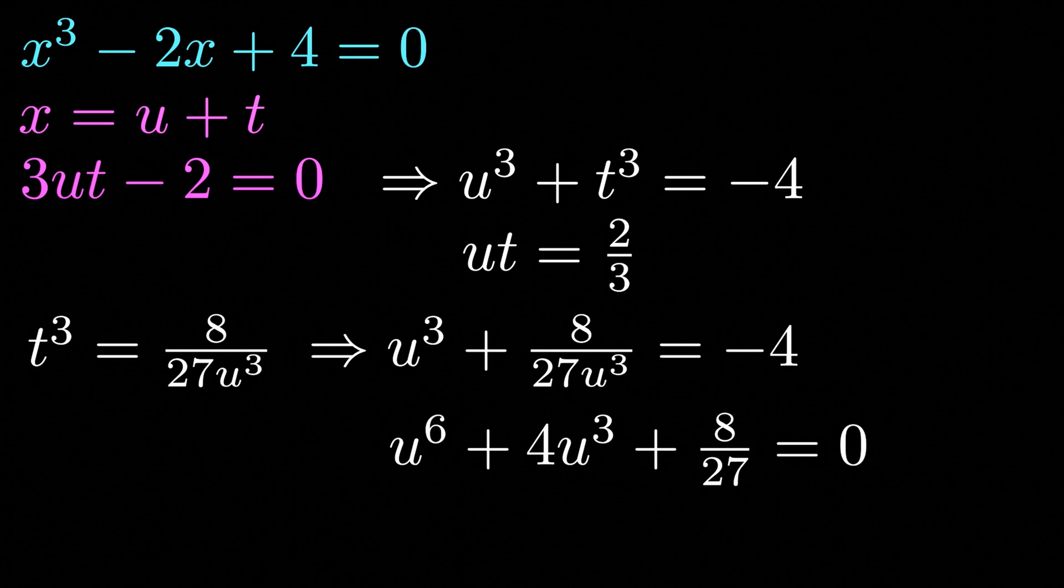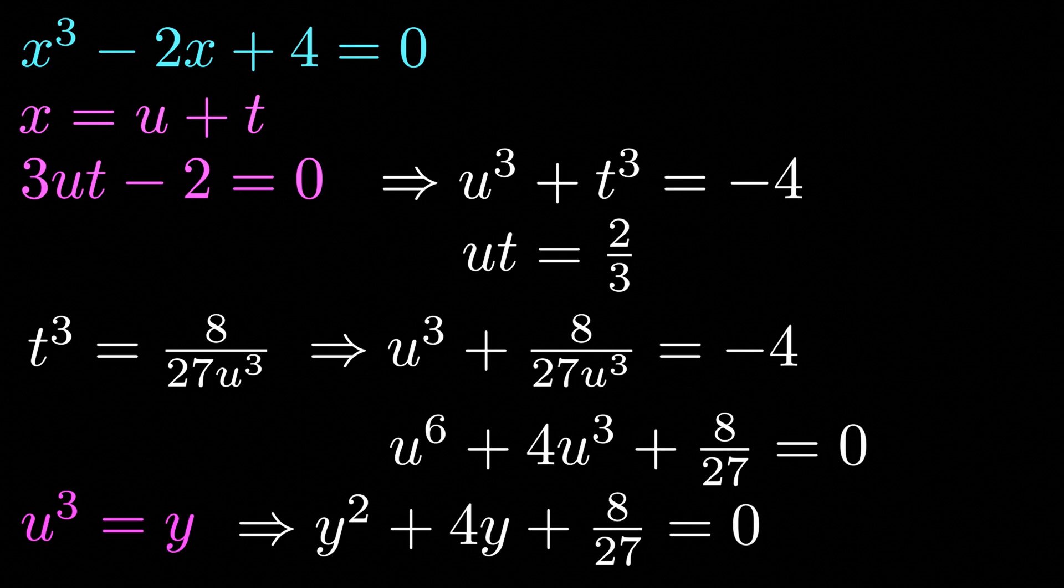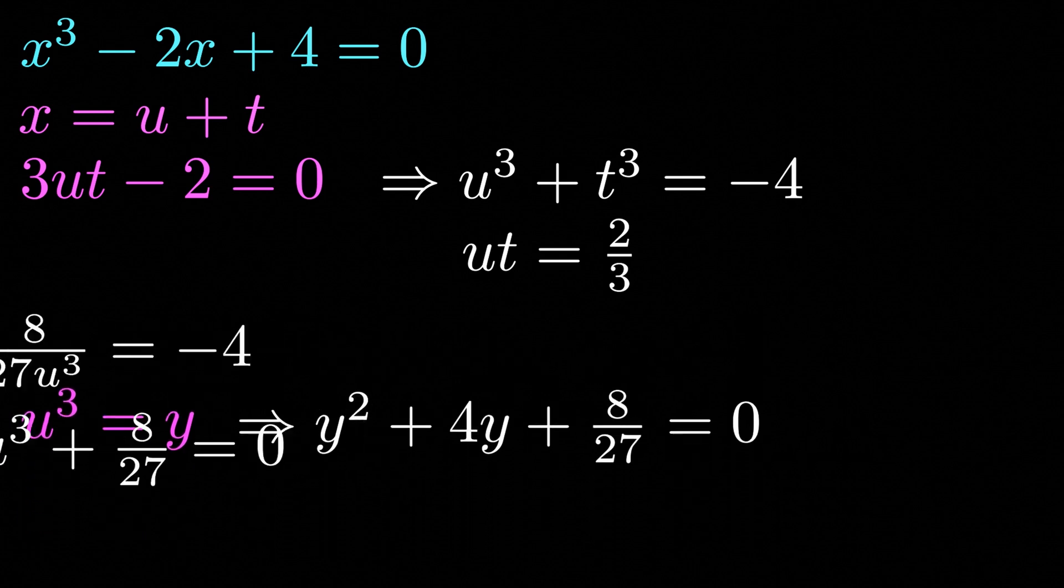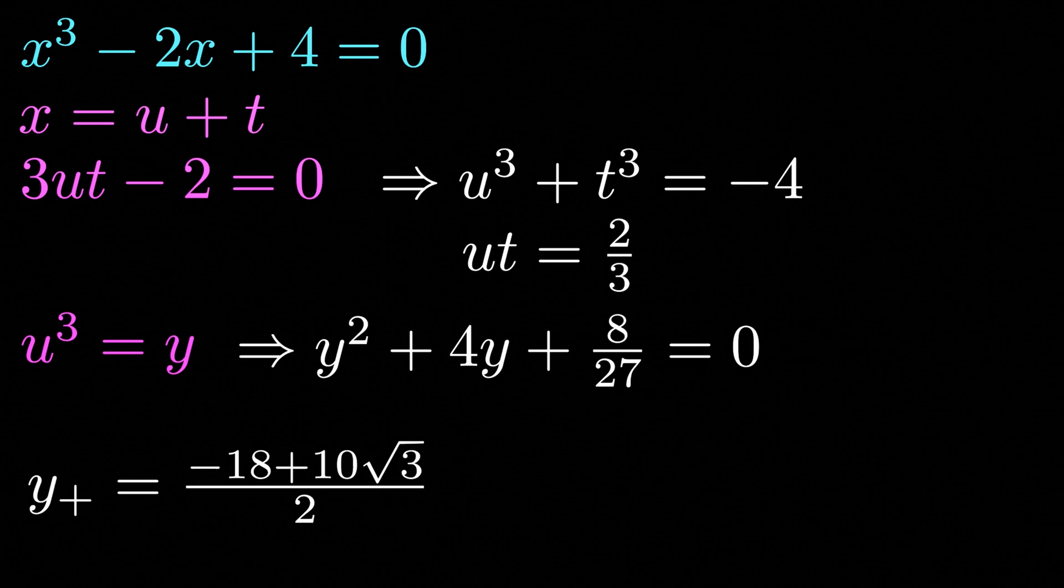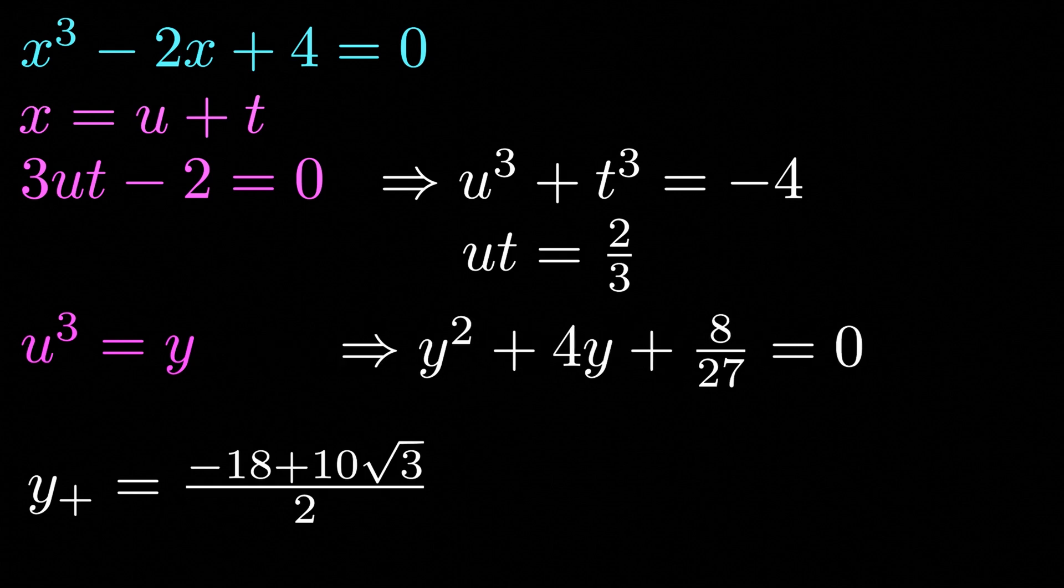But how can we solve this? Well, what we could do is let u cubed be equal to y, and this gives us the following quadratic equation: y squared plus 4y plus 8 divided by 27. And we can solve this using the quadratic formula. Doing so we get the following root: minus 18 plus 10 multiplied by the cube root of 3 divided by 2. Now we're only going to use the positive root here, but note if you were to use the negative root we would get the same solution.